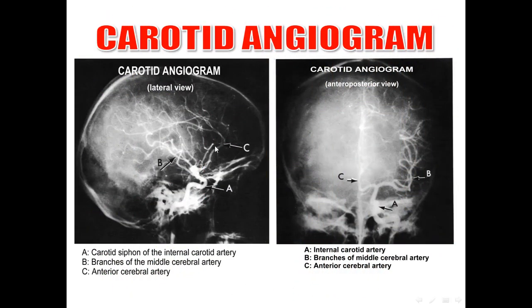Looking at this carotid angiogram, we can identify the carotid siphon. This part is the cavernous part, this part is the supra-cavernous part, and this one is the petrous part. The internal carotid artery then gives its two terminal branches: the anterior cerebral artery and the middle cerebral artery.